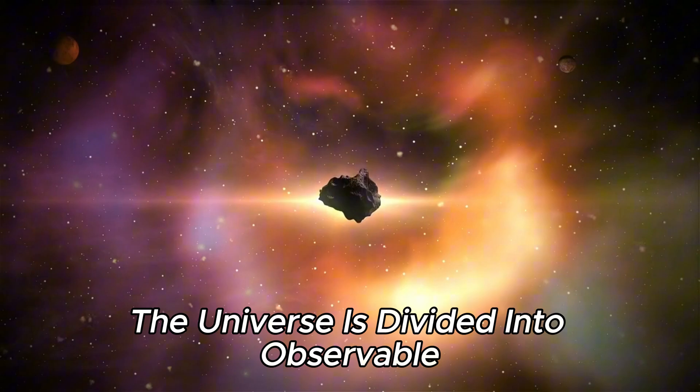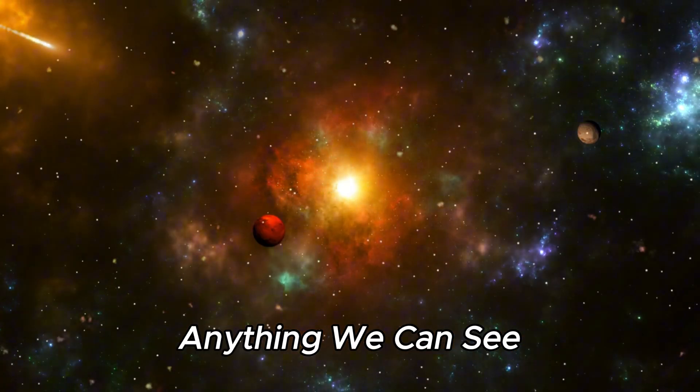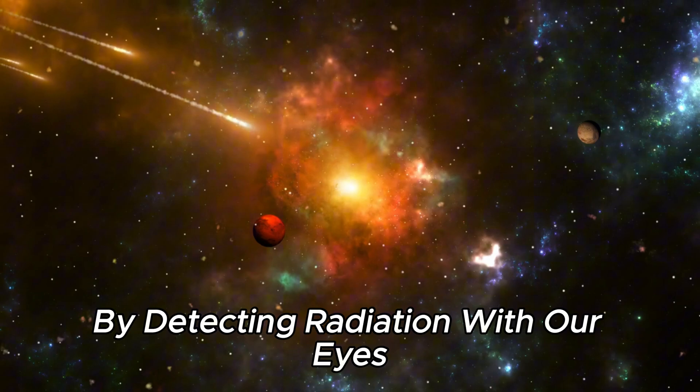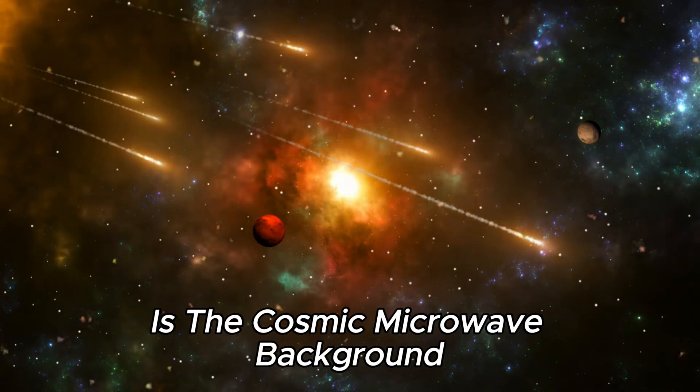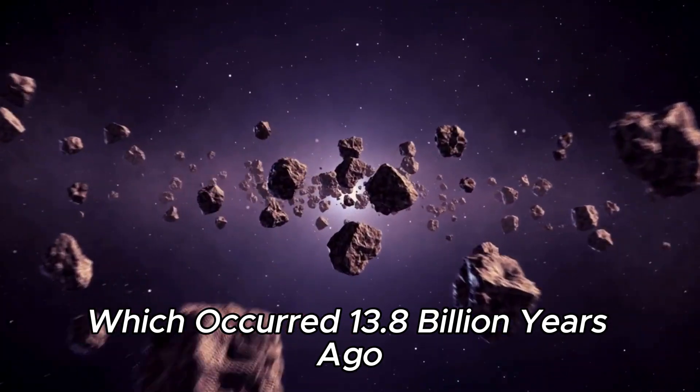The universe is divided into observable and unobservable, where the observable is anything we can see by detecting radiation with our eyes. The limit of the observable universe is the cosmic microwave background, which occurred 13.8 billion years ago.